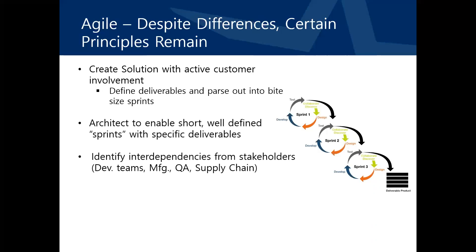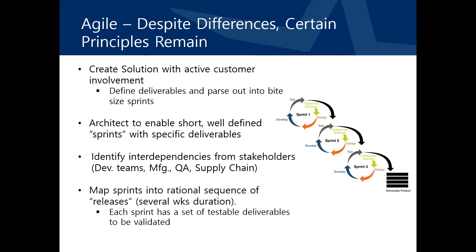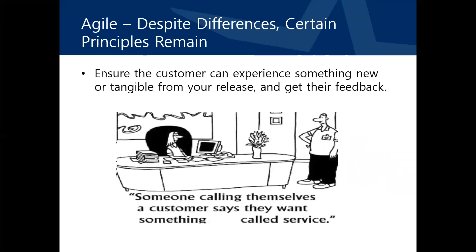Identify interdependencies among your various stakeholders — i.e., your development tools, manufacturing, QA, supply chain, and distributors — and incorporate the impact of these interdependencies into the sprints. Map those sprints into a rational sequence of releases, typically several weeks in duration. Remember that each sprint has a set of testable deliverables to be validated prior to release to the customer. Make sure the customer can experience something new and tangible at each release, and that it adds to the experience that will address their needs. Get feedback from the customer on their experiences.